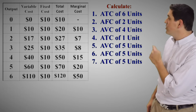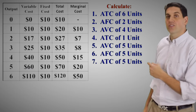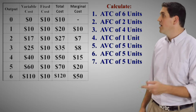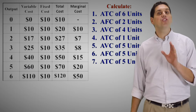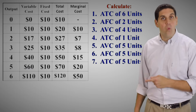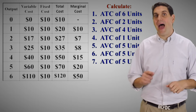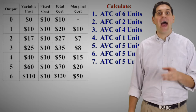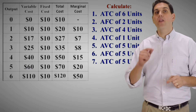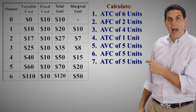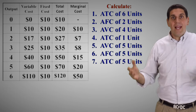I want you to calculate the average total cost of six units, the average fixed cost of two units, the average variable cost of four units, the average total cost of one unit, and calculate all three — the average variable, average fixed, and average total — for five units. So go back to your paper, number one through seven, and make sure to calculate each one of these. Pause the video and I'll go over them.